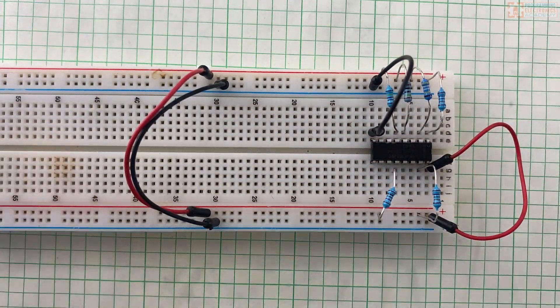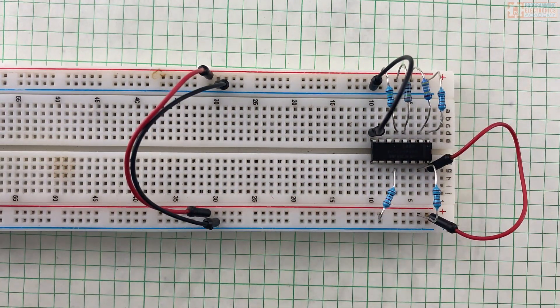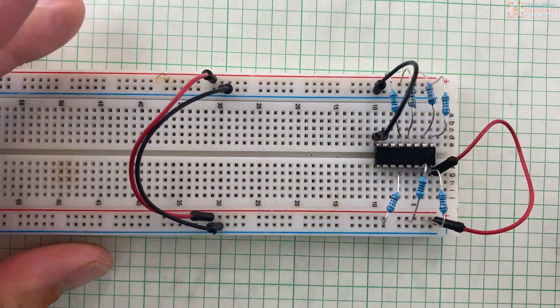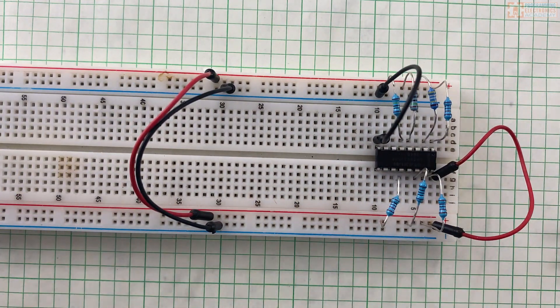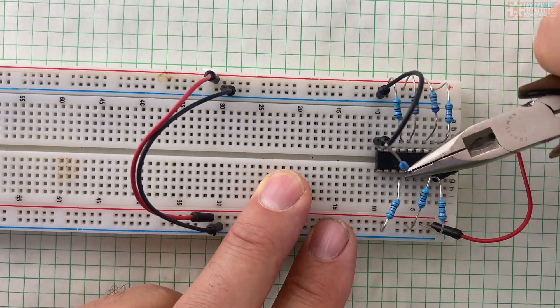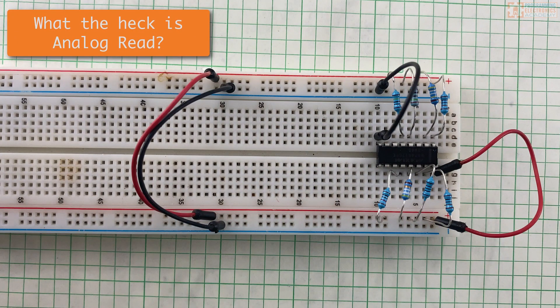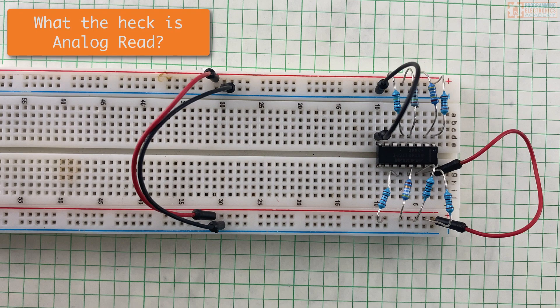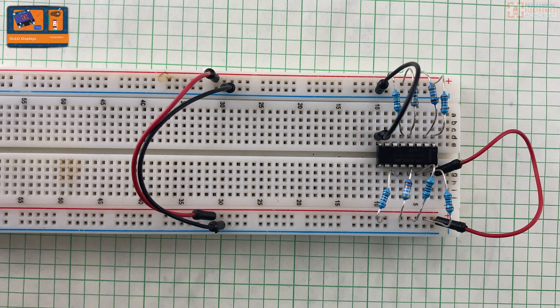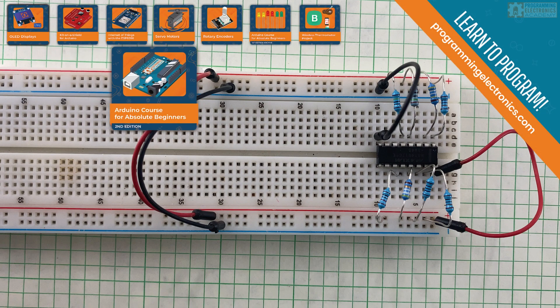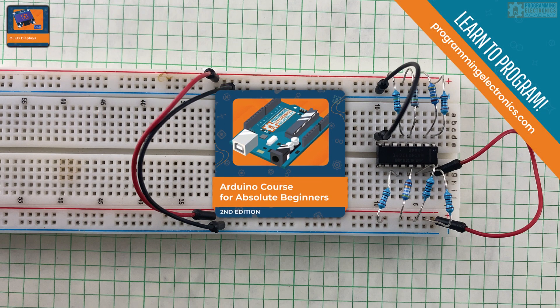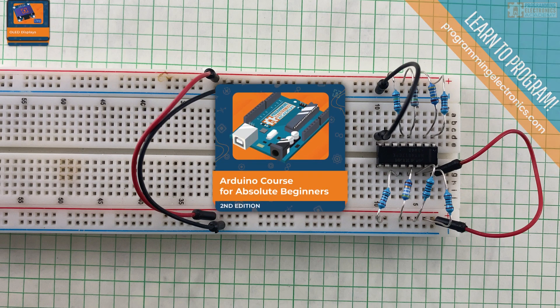In the code, we'll be selecting the different channels one by one and using analog read to determine the voltage, which we can then use to determine the unknown resistance with our ohmmeter. Now, if you've got no idea what analog read is, or even the idea of writing code to select different signals seems kind of foreign to you, then make sure to check out the training at Programming Electronics Academy. Not only will you learn how to code, but you'll learn how to actually control electronics stuff.